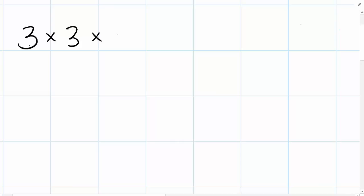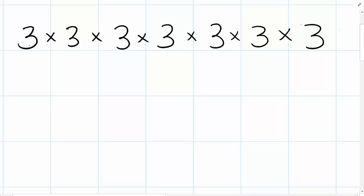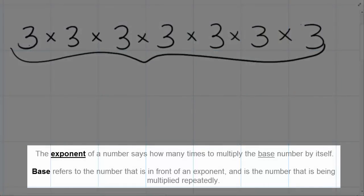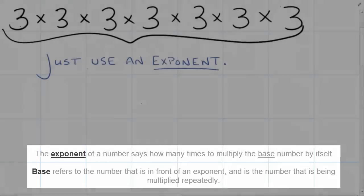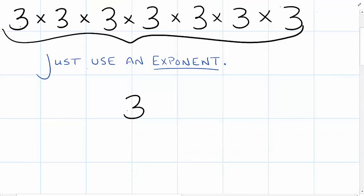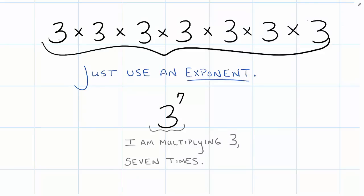I wish there was a way that you could write a number without having to write the same number being multiplied by itself over and over again. Wait a minute — there is! It's called exponents. If I just use an exponent, I can count up how many times I'm multiplying the same number by itself: 1, 2, 3, 4, 5, 6, 7 — and put that little number in the upper right-hand corner of my base. This is telling me that I'm multiplying 3 by itself seven times.